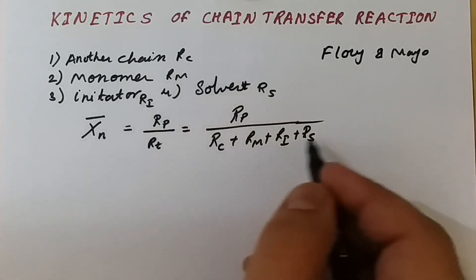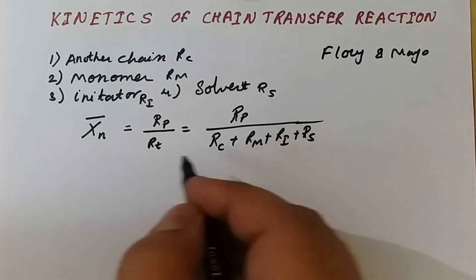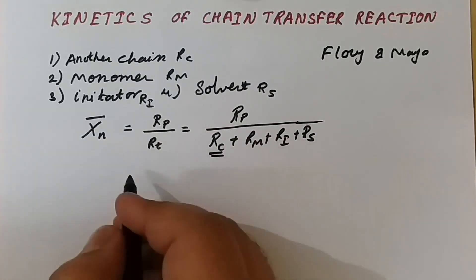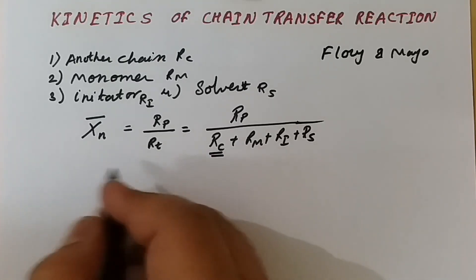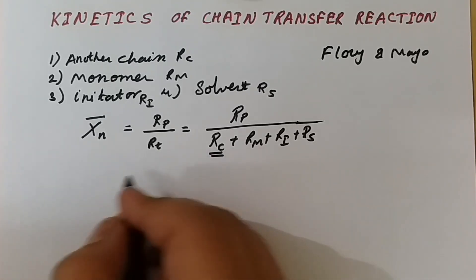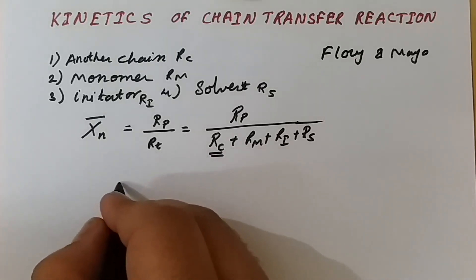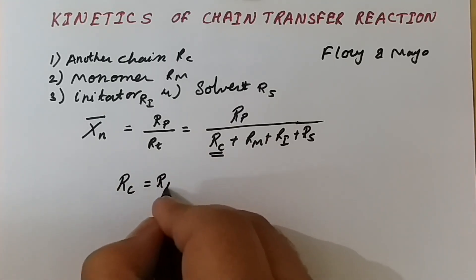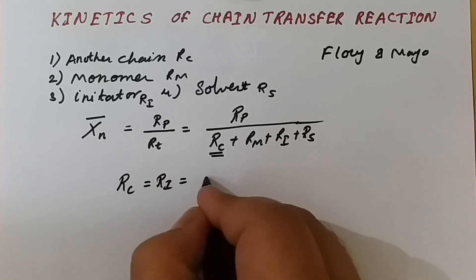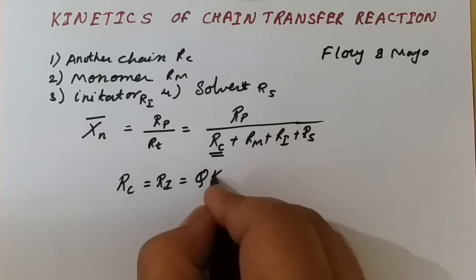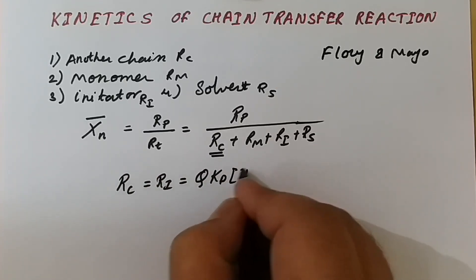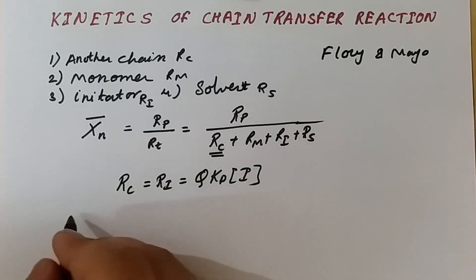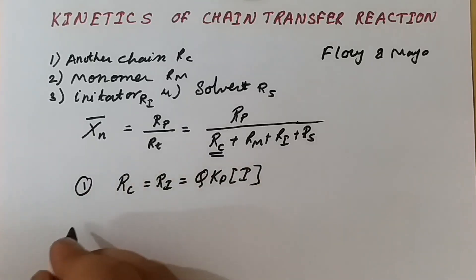Now we will find out the rate for each mechanism individually. The first one is the rate of coupling. As we have seen in our previous lecture, Rc equals the rate of initiation, which equals φ·kd·[I]. This is our rate of coupling.